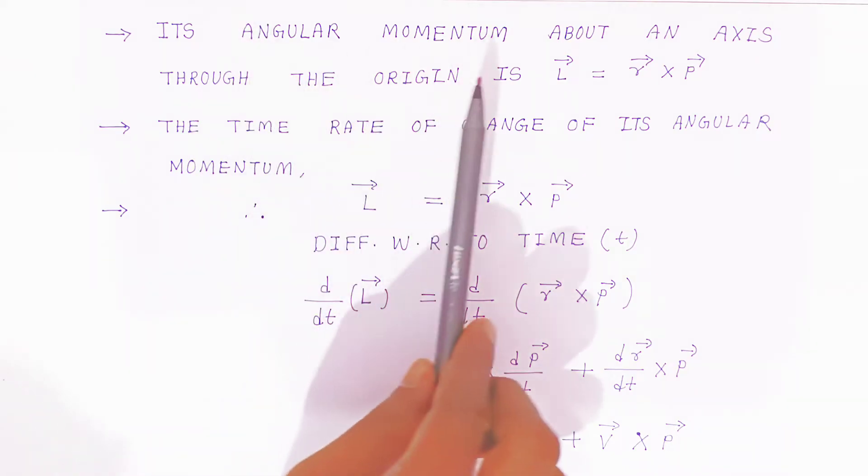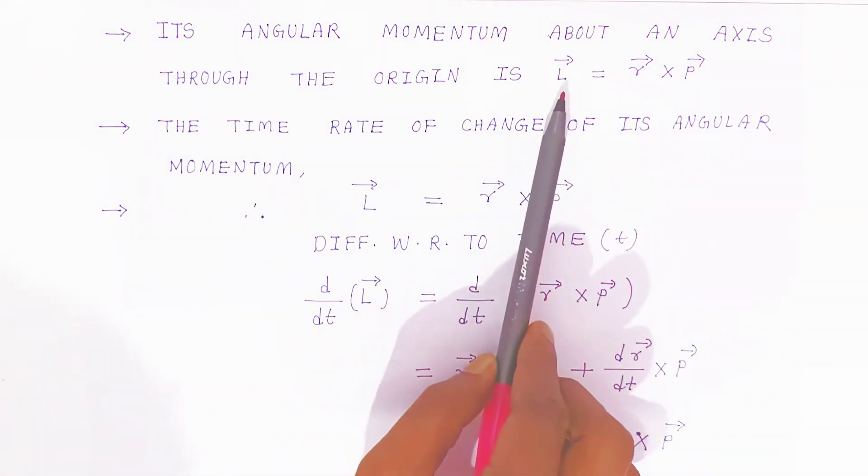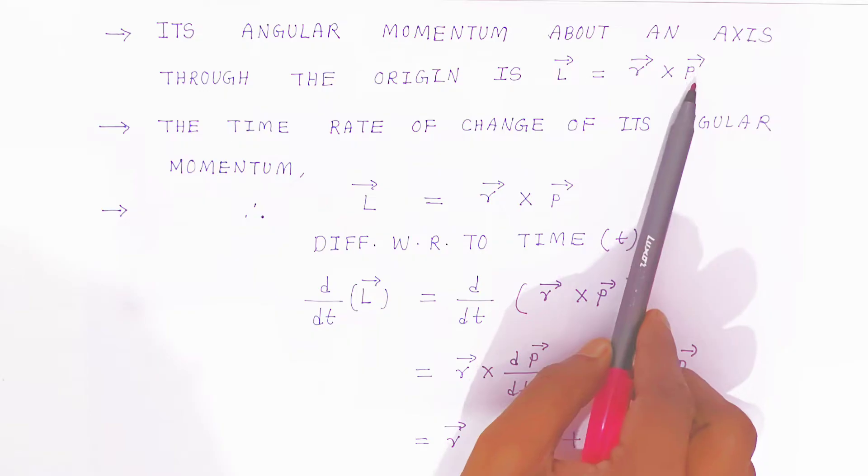Its angular momentum about an axis through the origin is given by L bar equals r bar cross p bar.